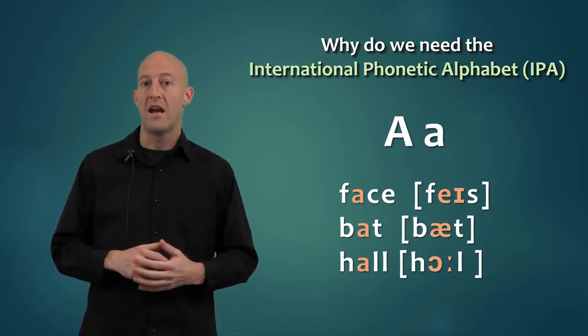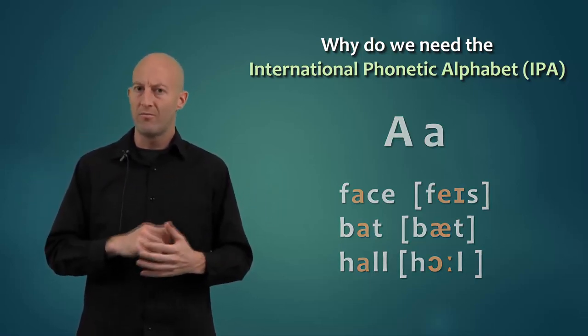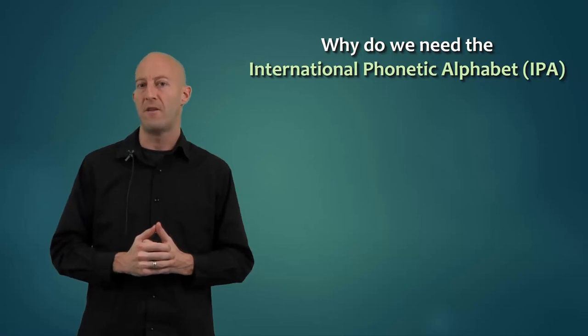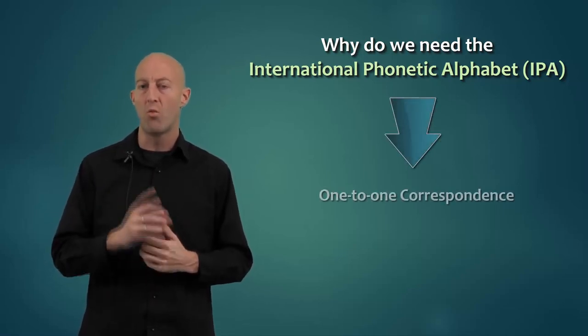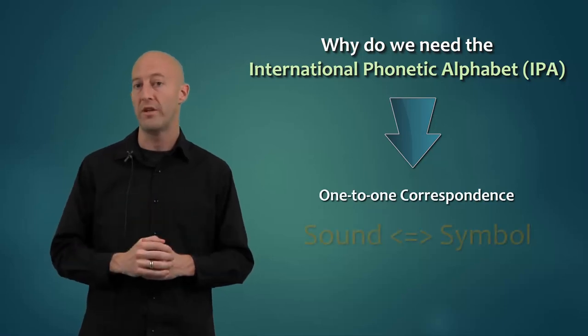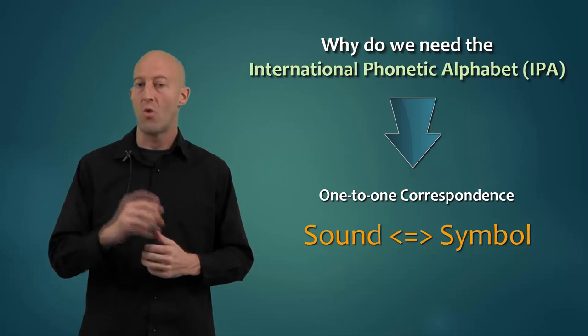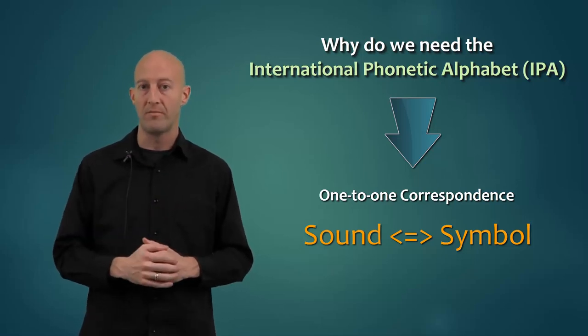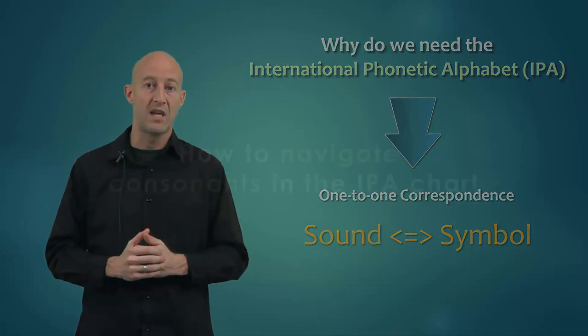Conversely, you might have multiple sounds that could be encoded in just one letter. So that's why we need the International Phonetic Alphabet, and it was devised as a way of introducing more one-to-one correspondence between sound and symbol. So if you hear a certain sound, then you always write it with a certain symbol, and conversely, one symbol always represents the same sound.